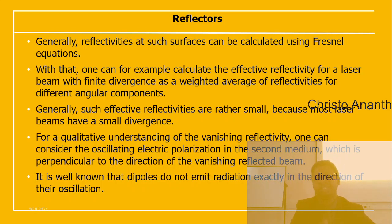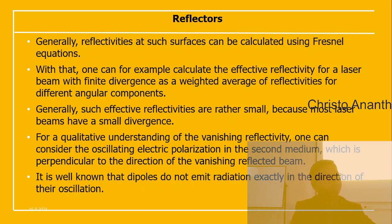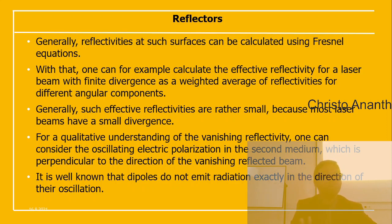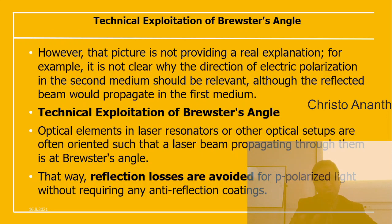Reflectivities at such surfaces can be calculated using the Fresnel equations. The effective reflectivity for a laser beam with finite divergence can be calculated as the weighted average of reflectivities for different angular components. For better understanding, consider the oscillating electric polarization in the second medium, which is perpendicular to the direction of the vanishing reflected beam — dipoles do not emit radiation exactly in the direction of oscillation.